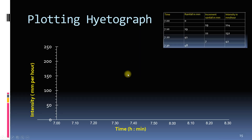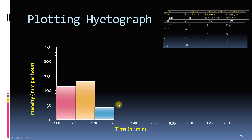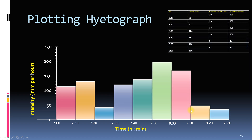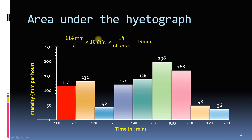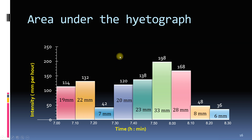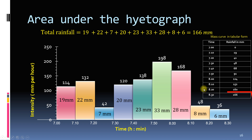Now we can plot the hydrograph. Between 7:00 and 7:10, the intensity is 114 mm per hour. For 7:10 to 7:20, it is 132 mm per hour, then 42 mm per hour, and so on. The area under the first bar will be 114 mm per hour multiplied by 10 minutes multiplied by 1 hour per 60 minutes, which gives 19 mm. Adding the areas of all bars gives us 160 mm of rainfall, which is the same as the total rainfall from the mass curve.